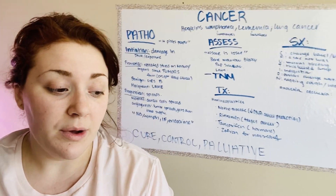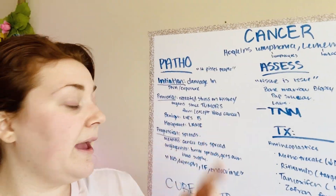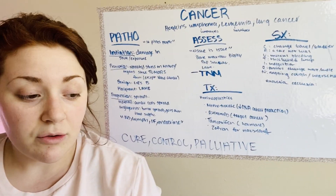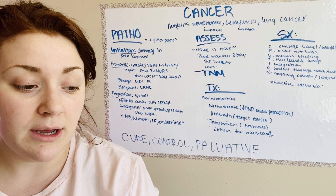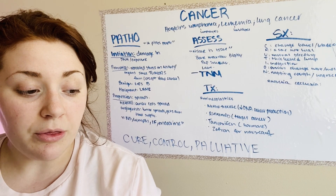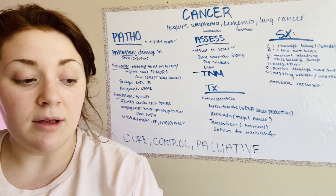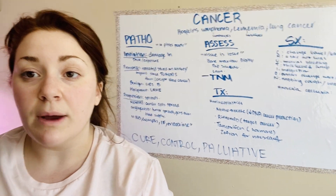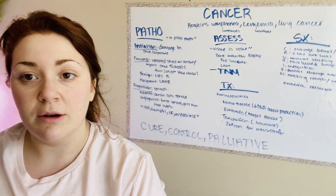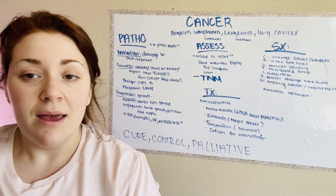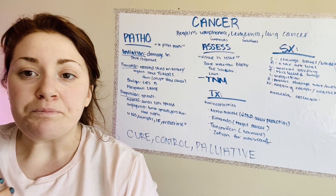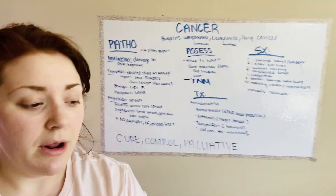Benign is the good one. I remember that with the mnemonic LIES: L is localized growth, I is inhibition of contact with other cells, E is encapsulated growth, S is a solid mass, and B stands for regular border. So this is the good one to get. If you hear you have cancer and it's benign, it's contained, it's not spreading — not as much to worry about.